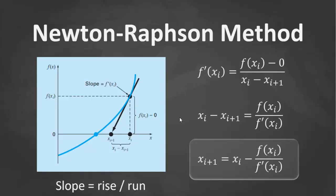The most widely used of all root-locating formulas is the Newton-Raphson equation. If the initial guess at the root is xi — that's your initial guess — a tangent line can be extended from the point (xi, f(xi)). The point where this tangent line crosses the x-axis usually represents an improved estimate of the root.